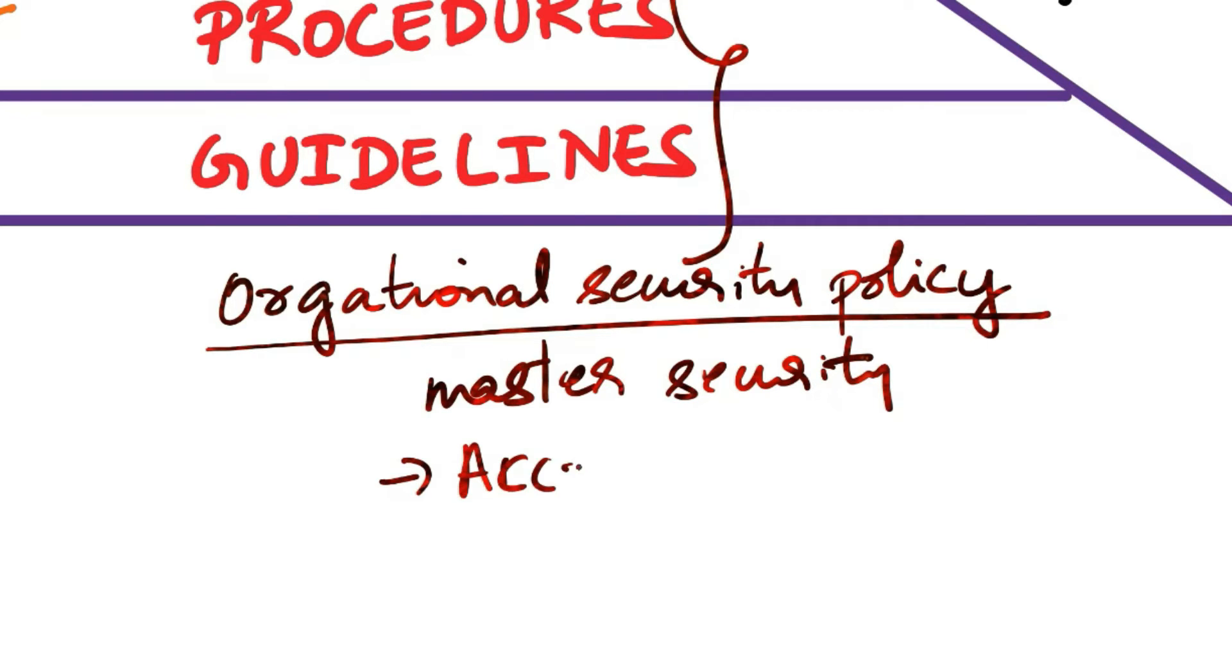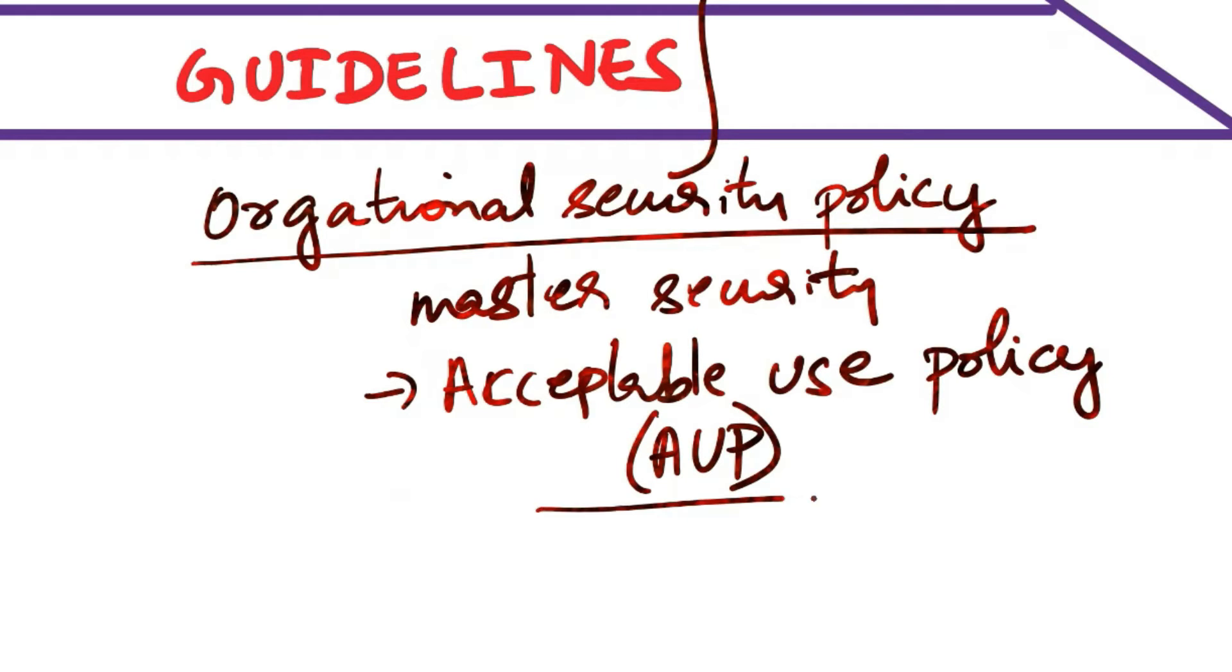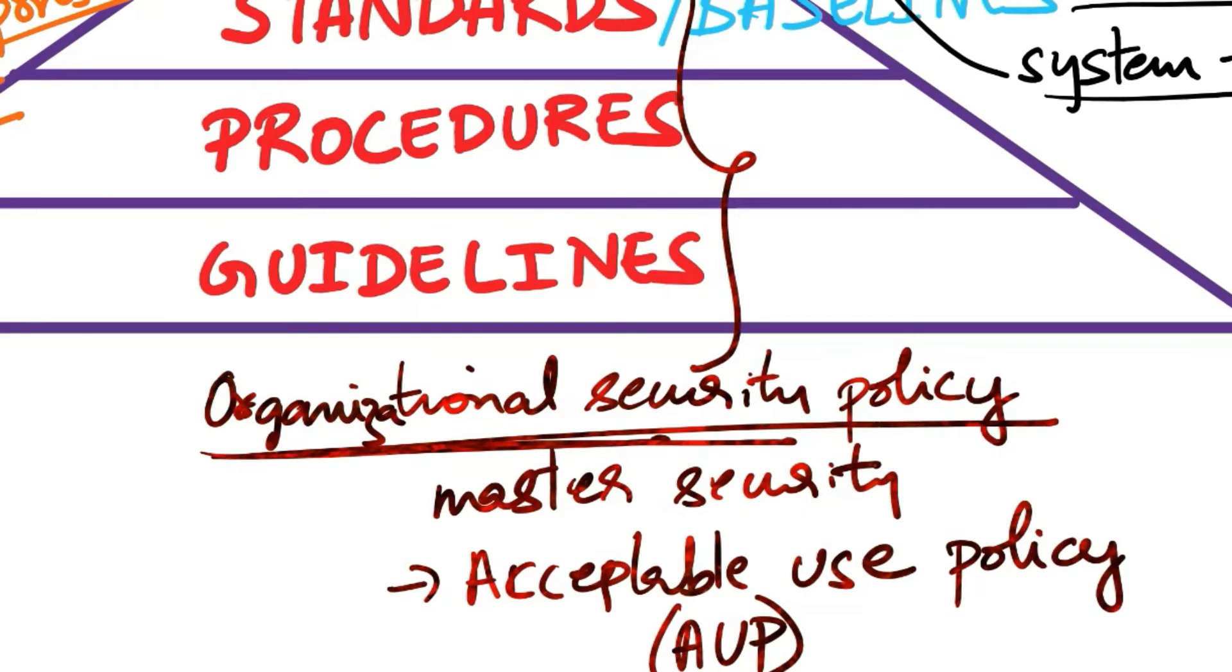Let's see some examples of organizational security policies. There is acceptable use policy, AUP. AUP is a set of rules and guidelines established by an organization to regulate the use of its information technology resources and assets by employees, contractors, and other authorized users. The primary purpose of an AUP is to ensure that the organization's IT resources are used in a responsible, ethical, and secure manner. Other examples include risk management policy, vulnerability management policy, data protection policy, access control policy, change control policy, physical security policy, and many like this.